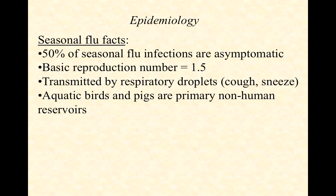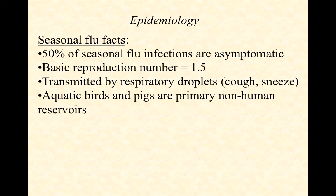Some facts about seasonal flu: about half of all infections are asymptomatic, meaning if you've gotten it twice in your life, you were probably infected four times on average. The basic reproduction number — how many others one infected person passes it to — is 1.5 for flu. That means for every two people sick with influenza, they'll likely pass it to three others. You can see how quickly that gets out of control: 50 people with flu will pass it to 150 others.